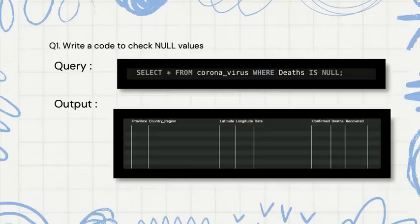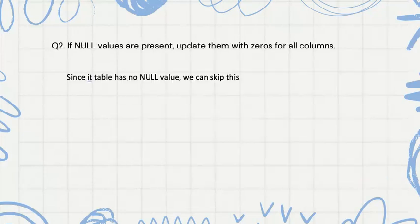Let's move on to the queries. The first query uses SELECT everything from coronavirus with a WHERE clause on a particular column — for example, deaths IS NULL. If the deaths column has a null value it will return true. Since none of the values have null, we can skip this query.